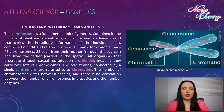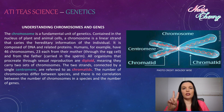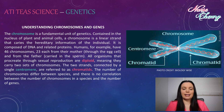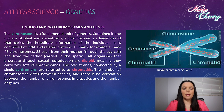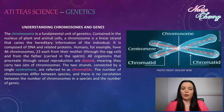23 chromosomes come from the mother through the egg cell and 23 from the father carried in the sperm. All organisms that procreate through sexual reproduction are diploid, meaning they carry two sets of chromosomes. The two strands are connected by a single centromere and are referred to as chromatids. The number of chromosomes differs between species and there is no correlation between the number of chromosomes in a species and the number of genes.